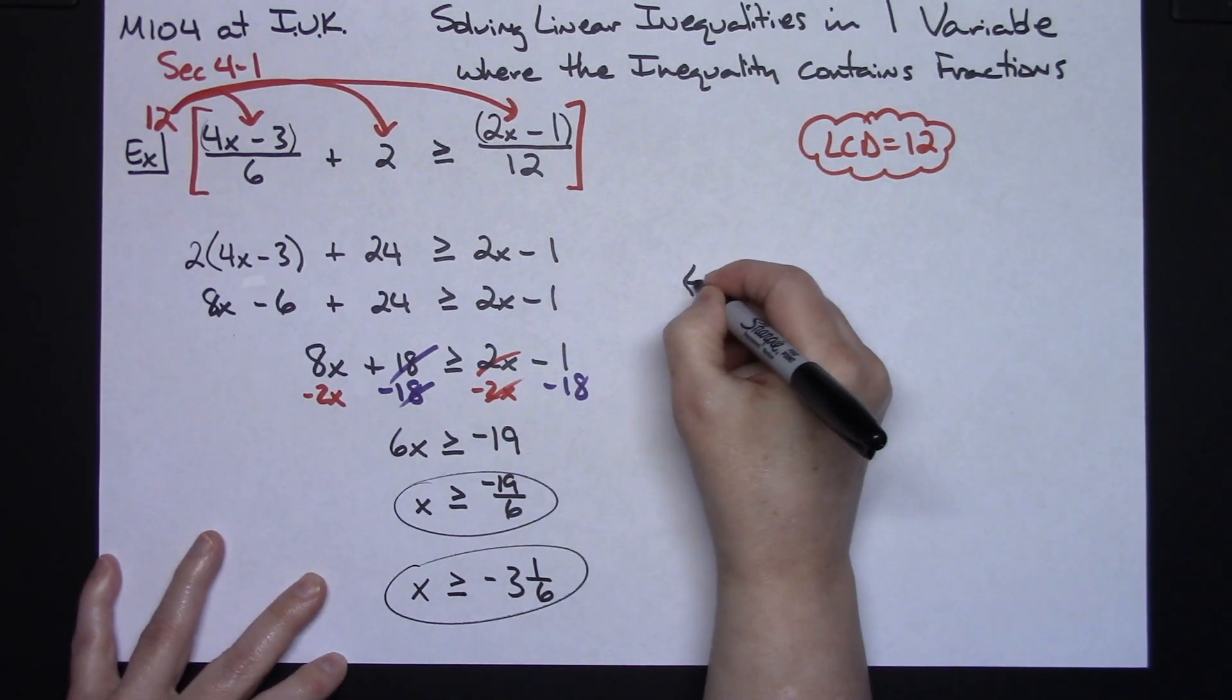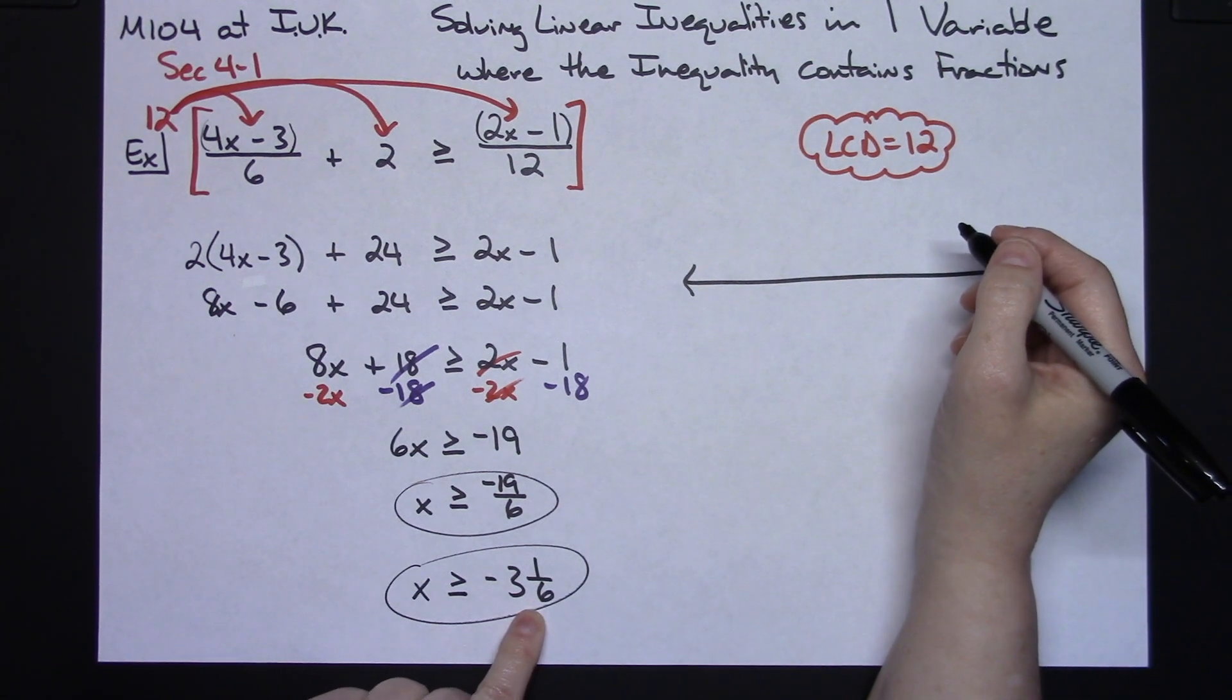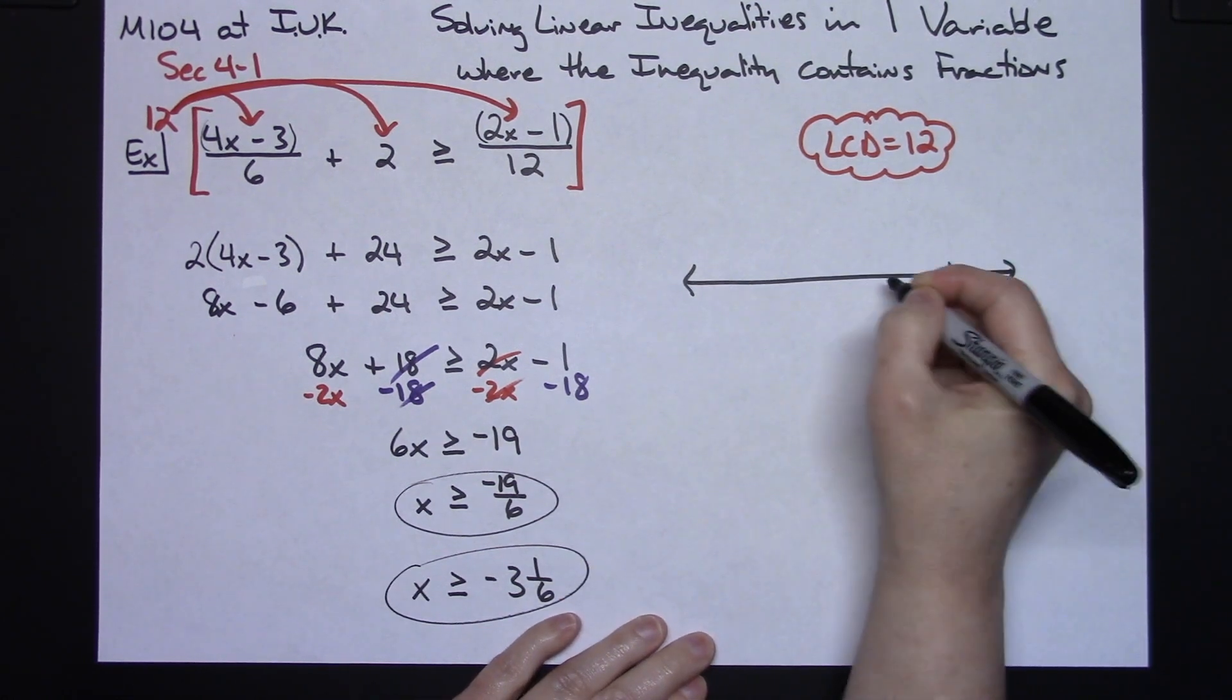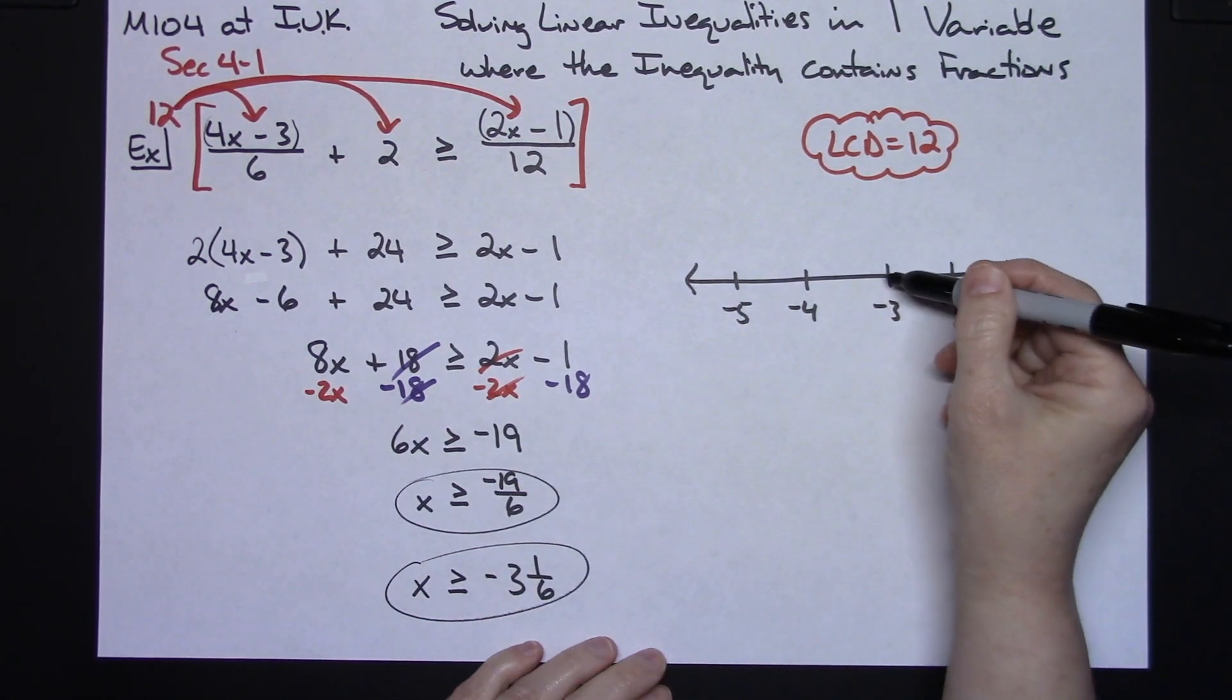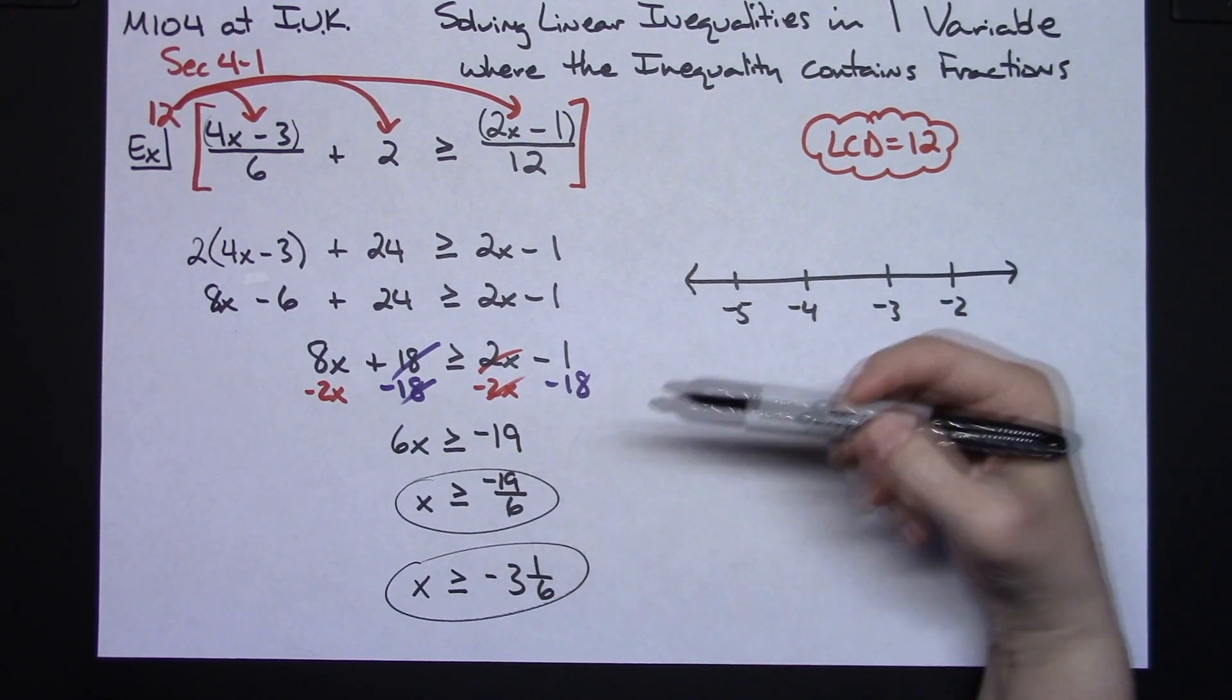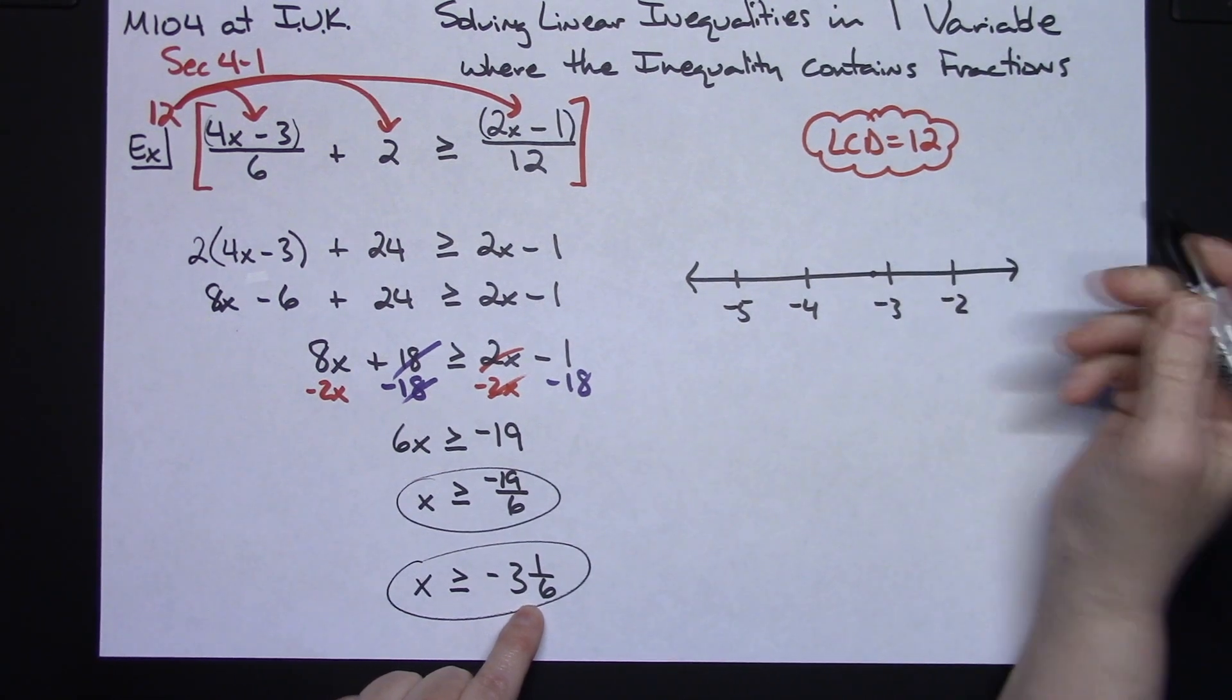So on our number line, since this is a college algebra class, we're going to be using the closed brackets and open bracket concept. Negative 3 and 1/6 is going to be in between negative 3 and negative 4. So I'm going to put a negative 2 and a negative 3, a negative 4 and a negative 5 on my number line appropriately. That just shows that you know how to put the numbers on the number line in the right order. Now, a negative 3 and 1/6 is going to be just a little bit past. Technically, I should not put a hash mark for negative 3 and 1/6 because the only hash marks on a number line should be integers. So I'm going to just estimate about where that's going to be. Let's just say right there, just rough estimate.